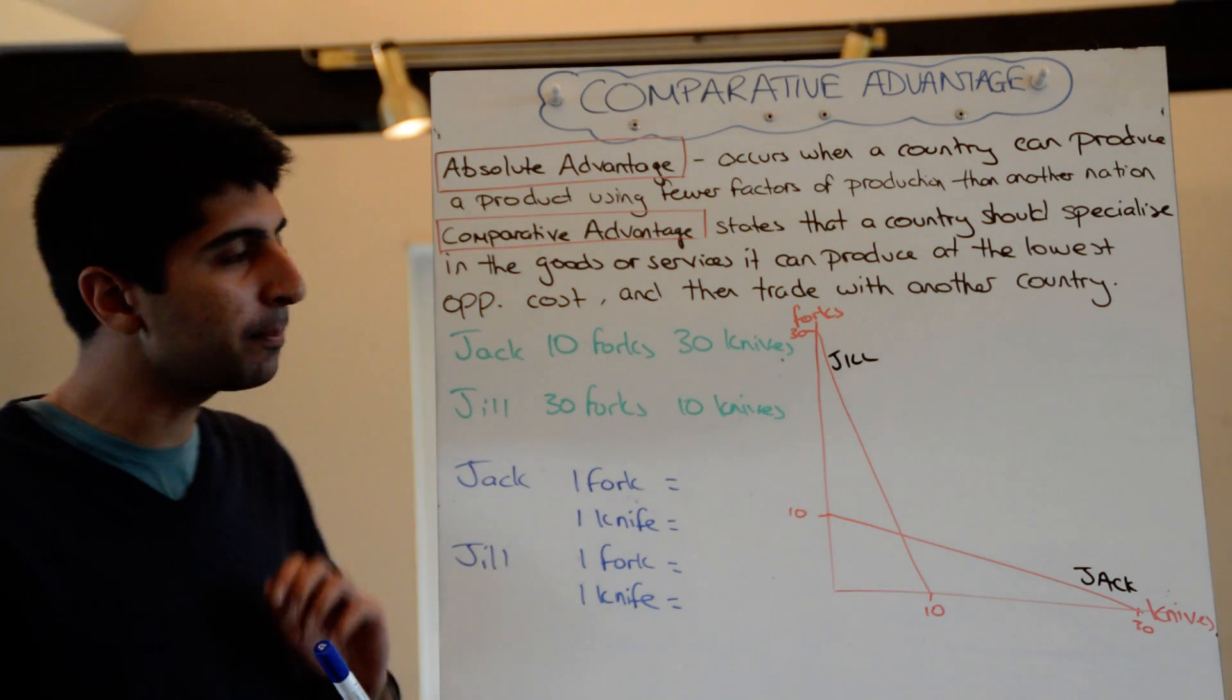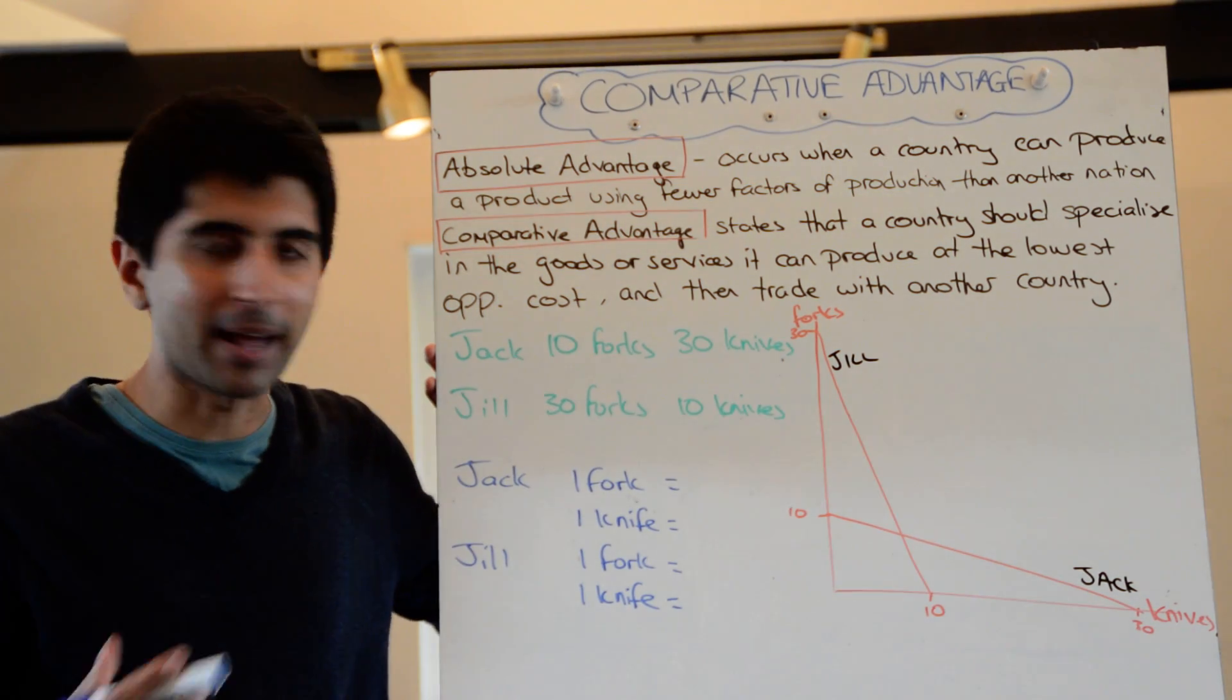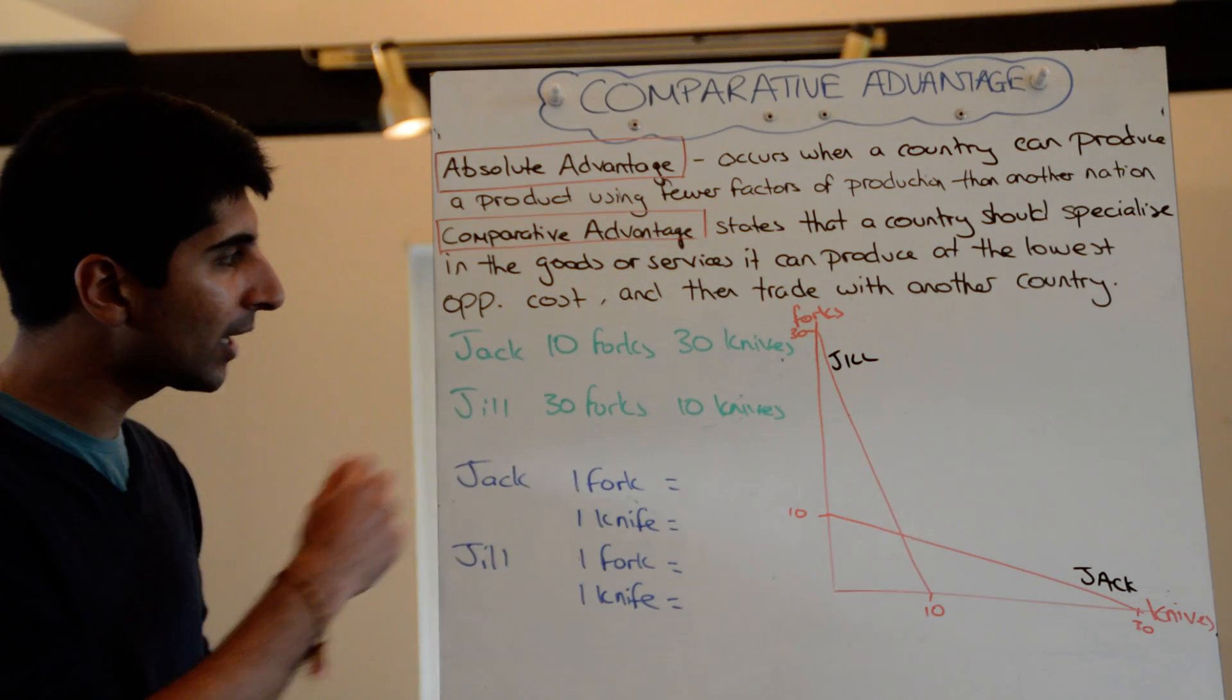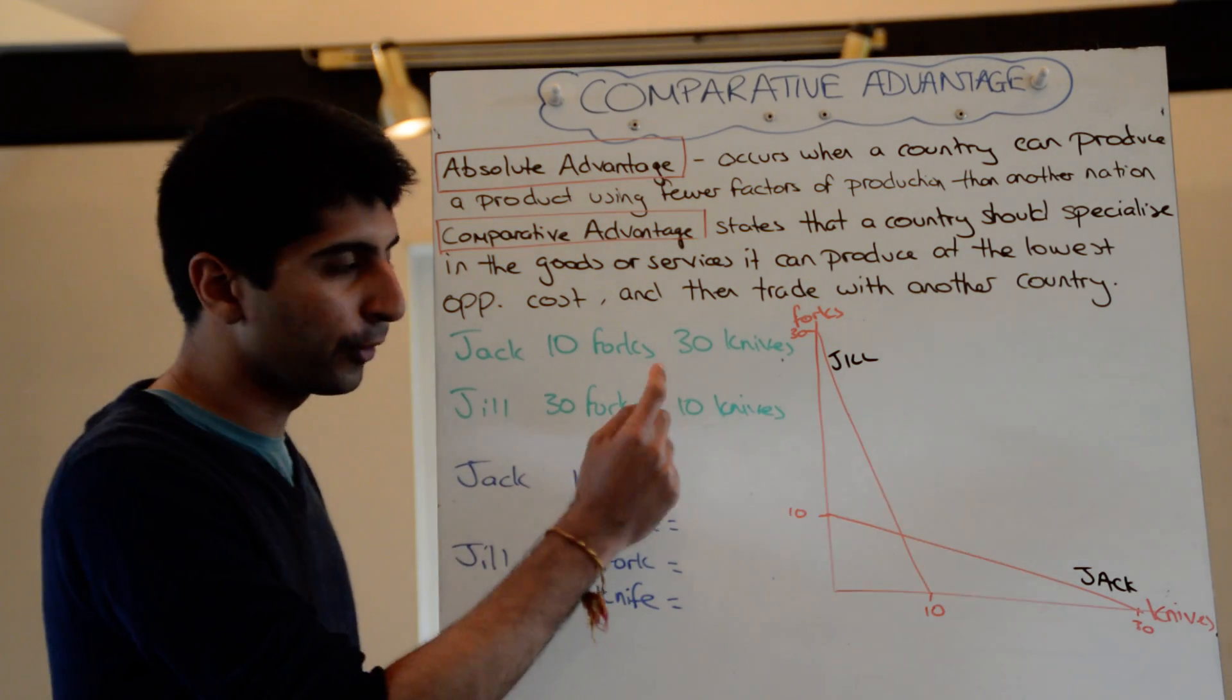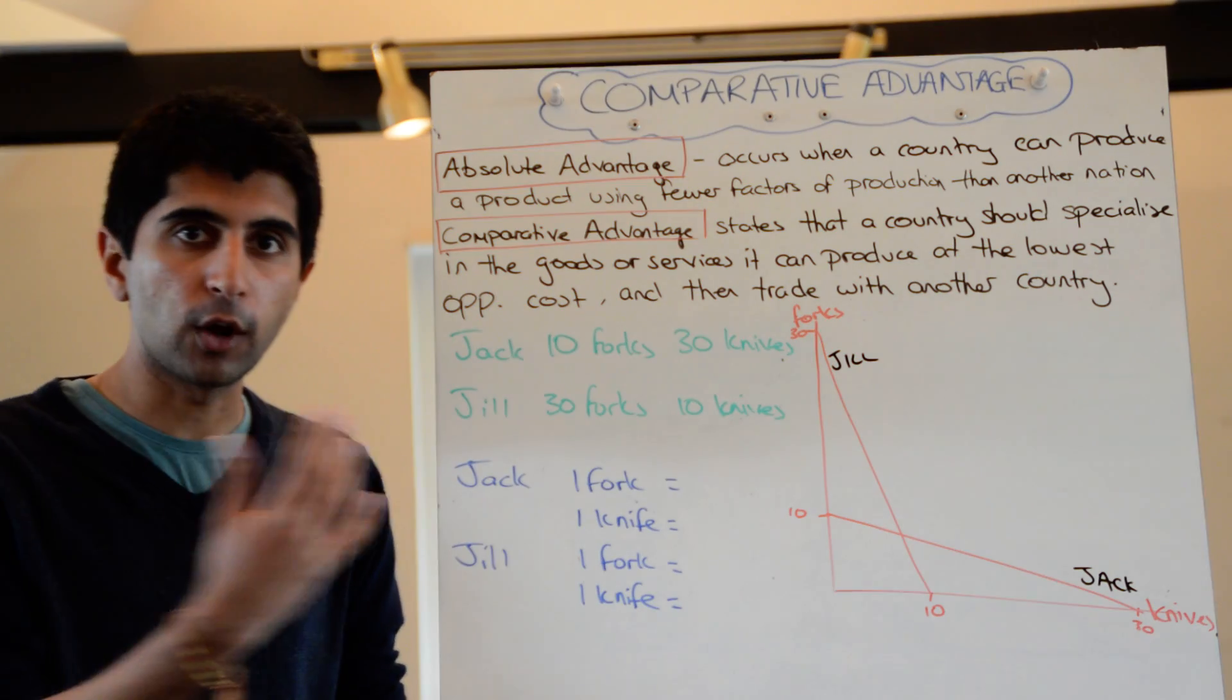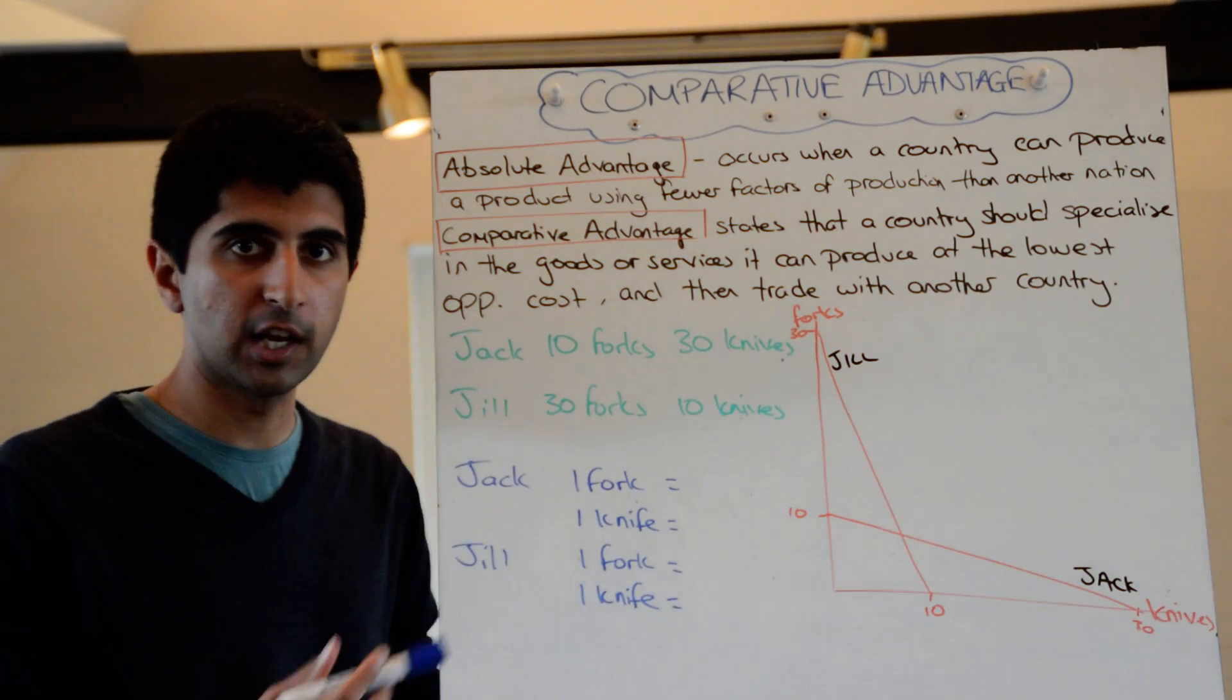Looking at this very simple numerical example, I've got Jack and Jill, so these could be two countries. Jack and Jill can produce either forks or knives. Jack can produce either 10 forks or 30 knives, Jill either 30 forks or 10 knives. Quickly let's go through the comparative advantage and let's work out who's got the lowest opportunity cost for fork production and knife production.